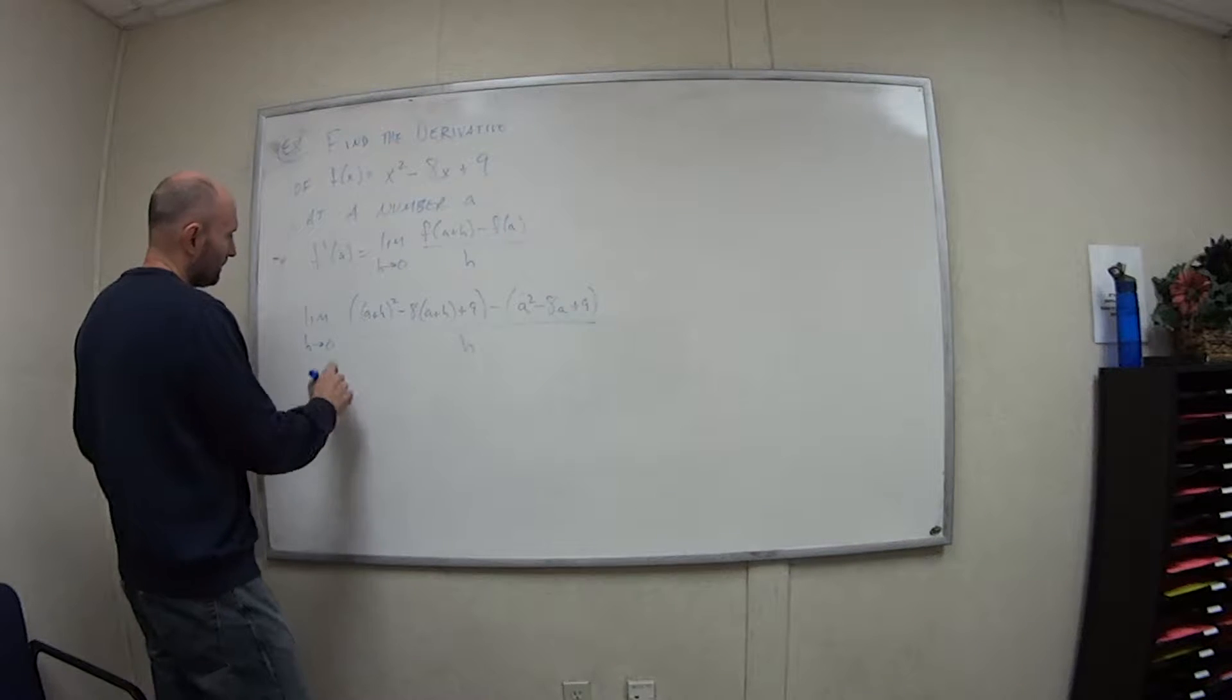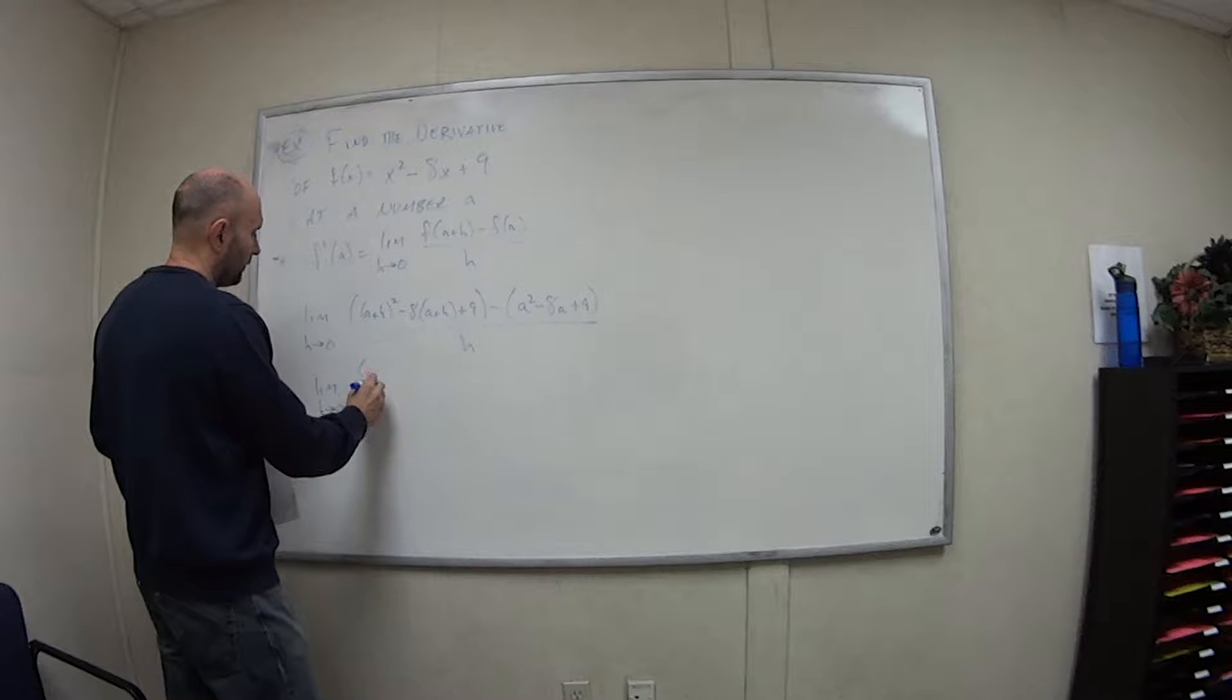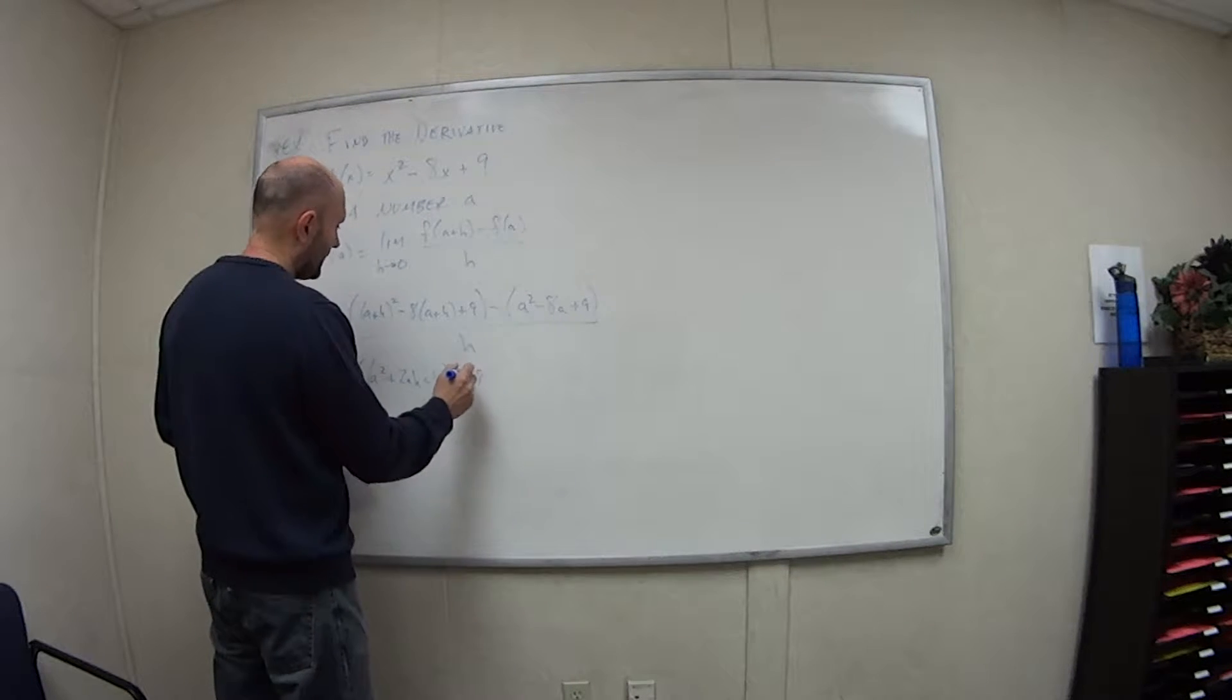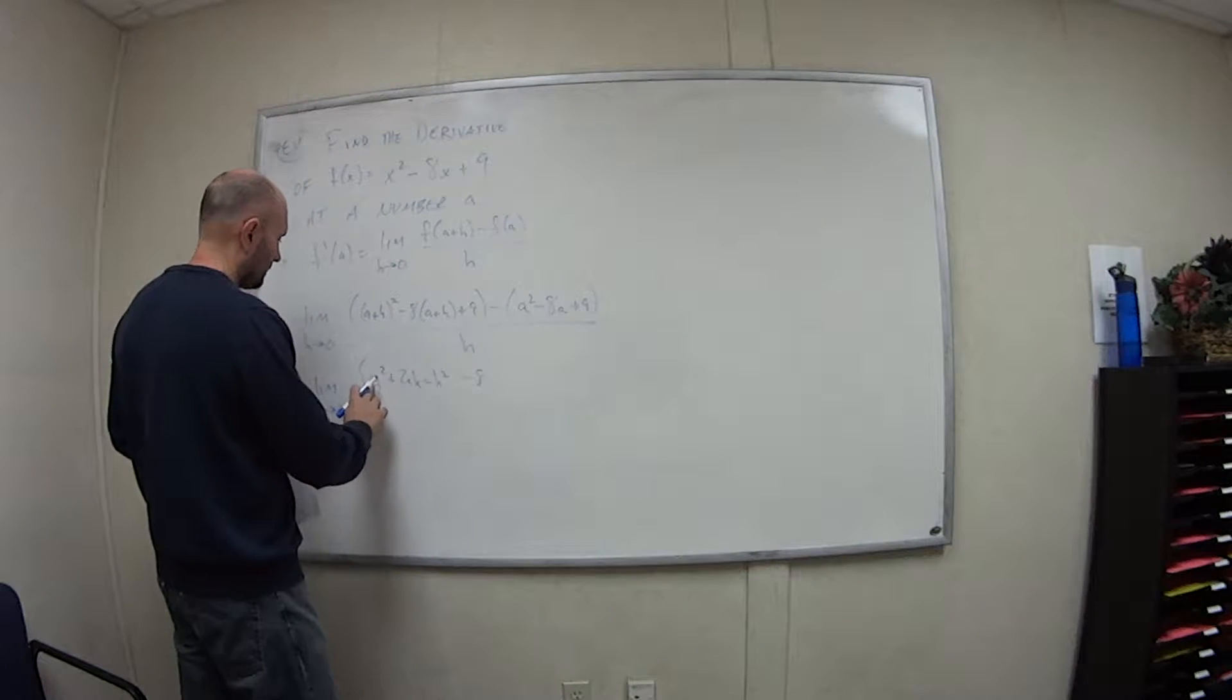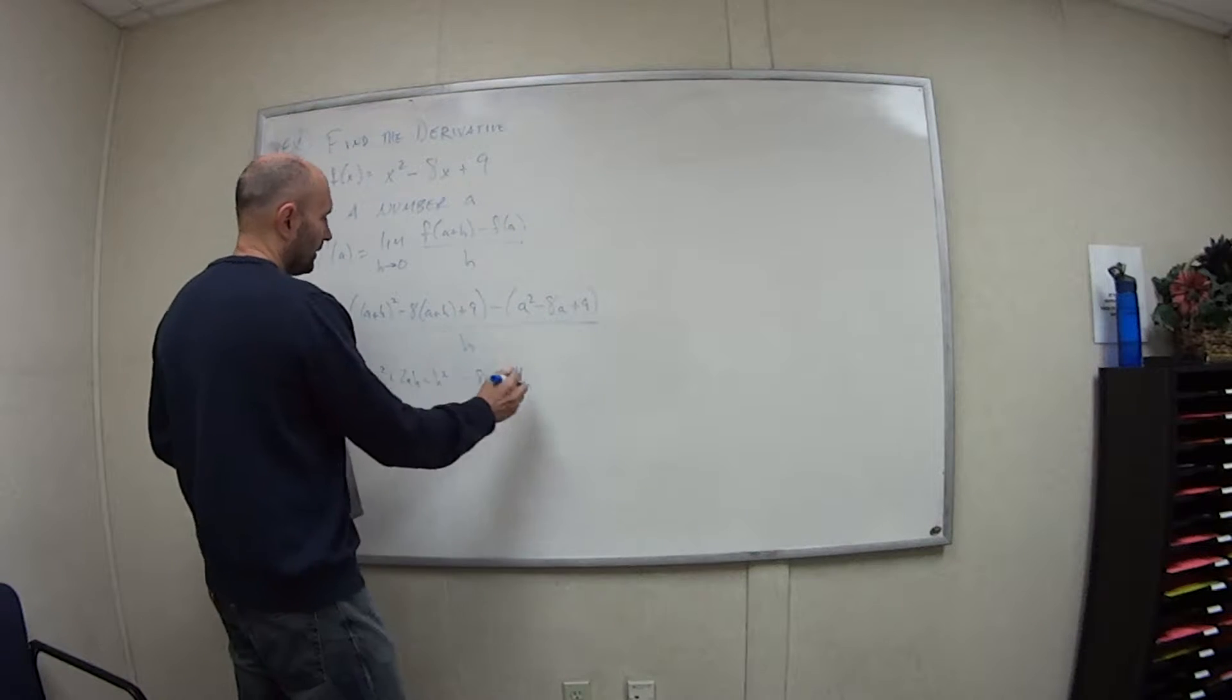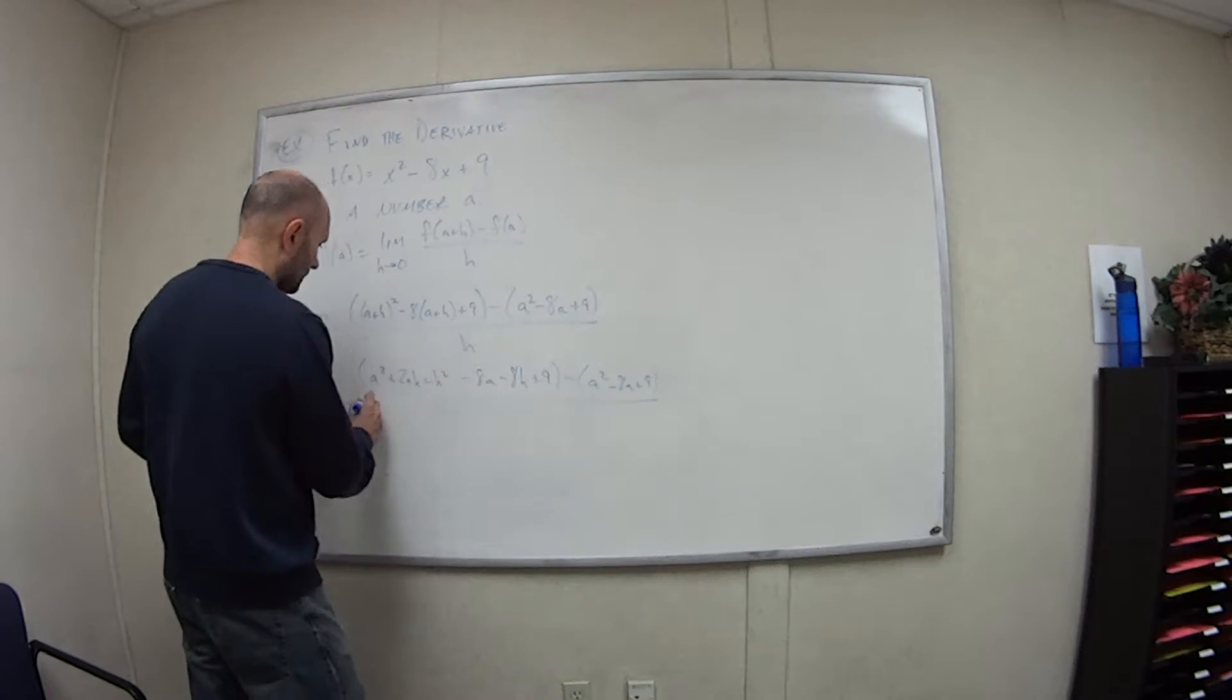We got a squared binomial, we have some negative signs, more negative signs. If you just mess up even one piece of that, the rest of your time is really spent doing work you shouldn't even have to be doing. So let's simplify this. Limit as h goes to 0. This guy here is a squared plus 2ah plus h squared, and then minus 8 - we can distribute it at this point. So we have minus 8a and minus 8h plus 9.